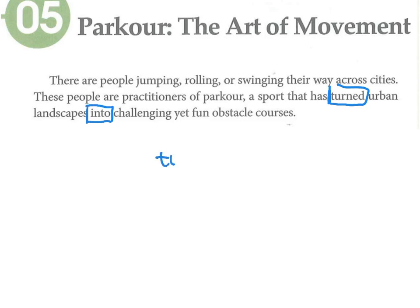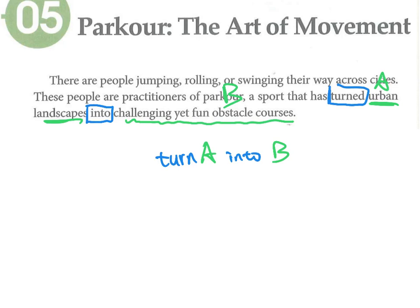turn into是一个片语，接下来要定位出A和B。A就是urban landscapes，B是后面的内容。urban的意思是城市，landscape是风景或地标，就是城市的景色、建筑。